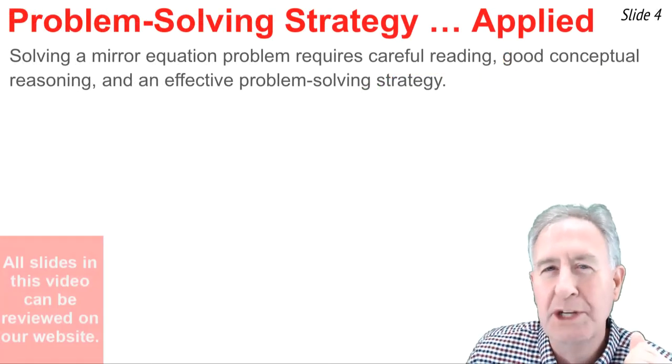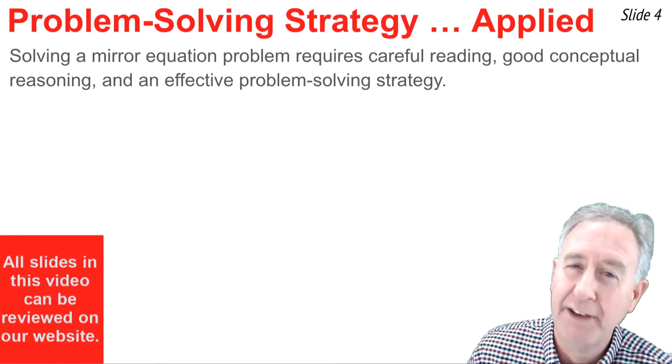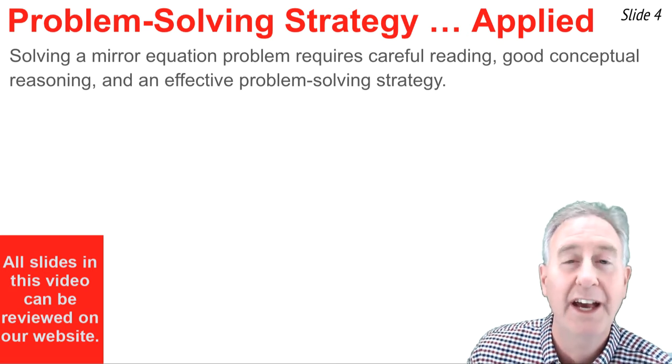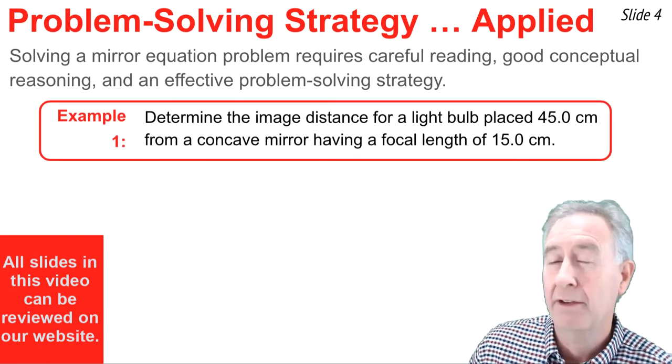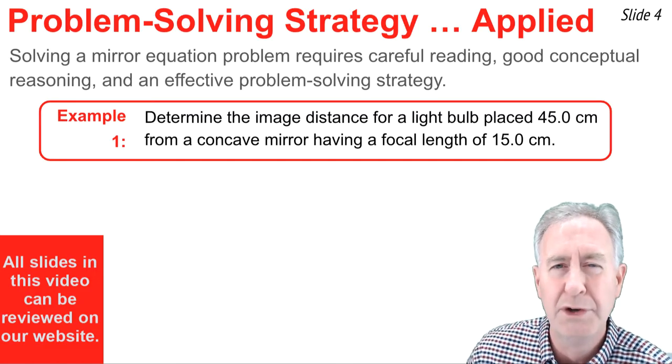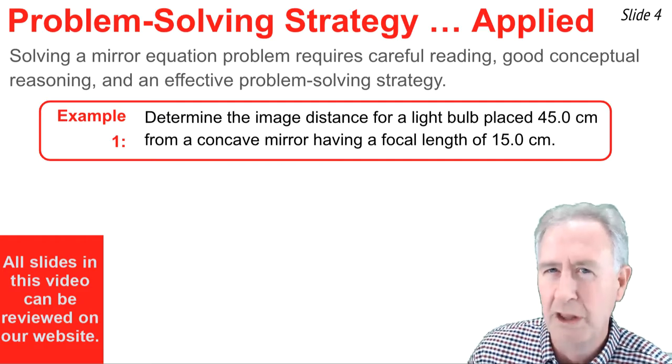Solving a mirror equation problem requires careful reading, good conceptual reasoning, and an effective problem solving strategy. I'd like to demonstrate with our first example. Here's the problem. The first thing I'm going to do, the first step, is to read carefully. To determine the image distance for a light bulb, place 45.0 centimeters from a concave mirror having a focal length of 15.0 centimeters.